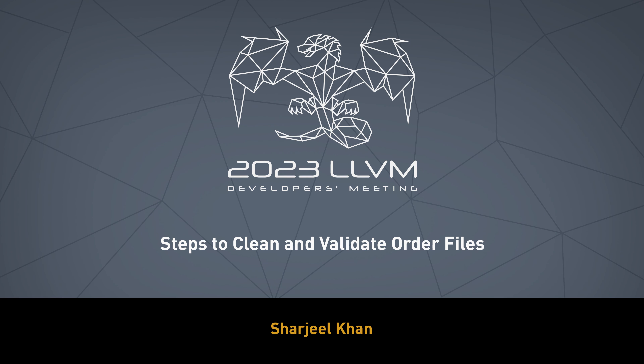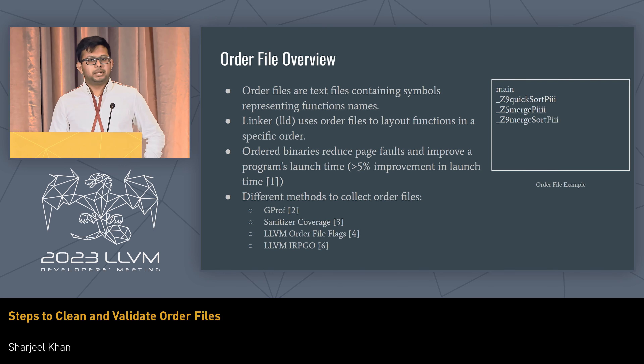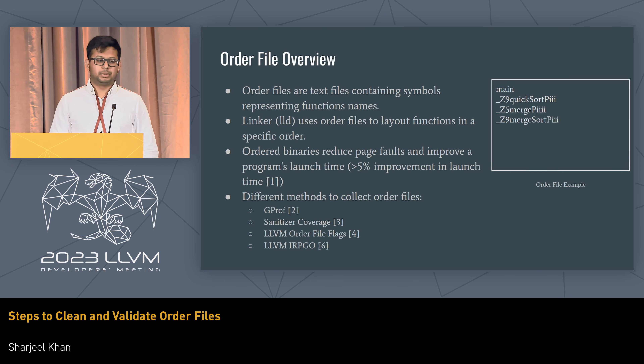If you don't know what an order file is, it's basically a text file containing symbols representing function names — for example, main, quicksort, merge, merge sort. Typically, the linker uses them to lay out functions in a particular order in the binary. These ordered binaries typically reduce page faults and improve launch time.